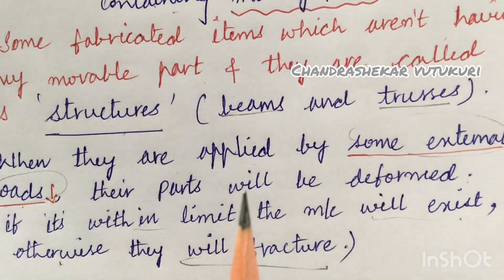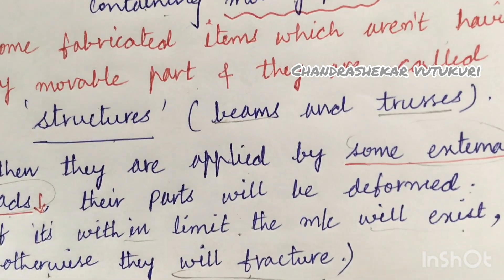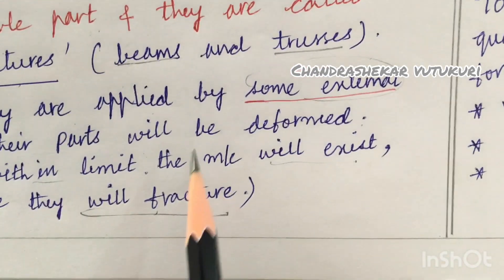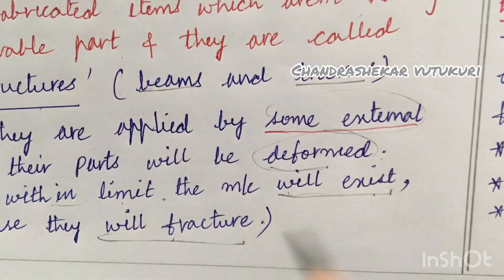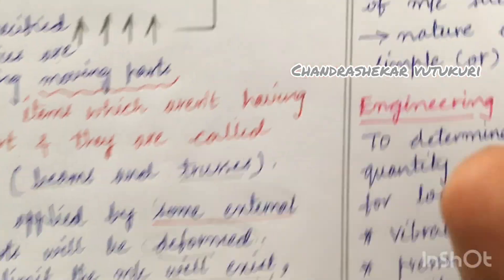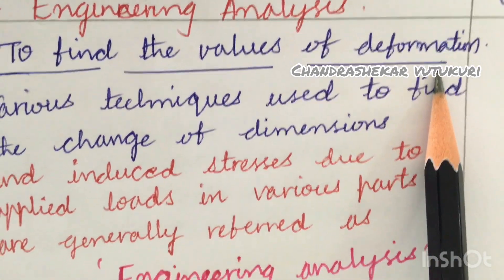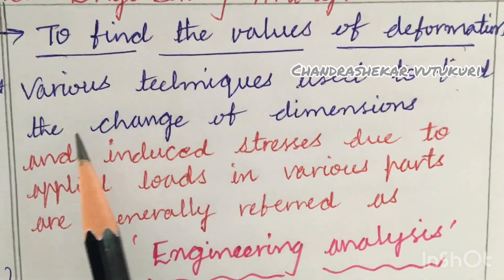If it fractures, what is the purpose of doing this? The waste of human power as well as waste of money and waste of machine. That is the reason, what we are supposed to do here is, how much force needs to be applied, how much external load is to be applied, when it is going to deform. We need to study in this course - to find the values of deformation. It is deforming within the limit, the machine will exist. Otherwise, if it deforms beyond that, it will fracture. That's the waste of material.